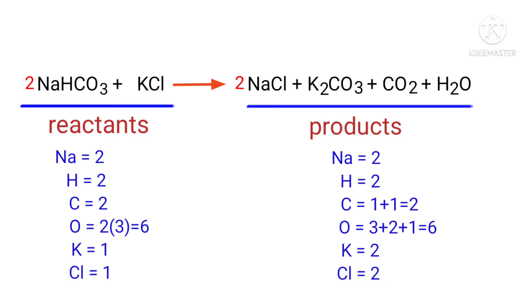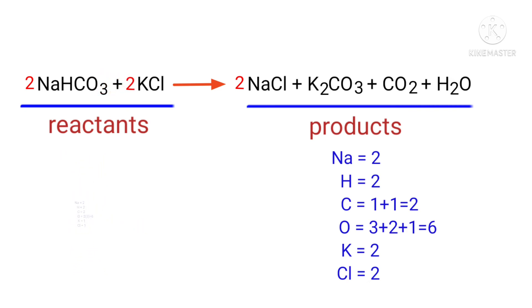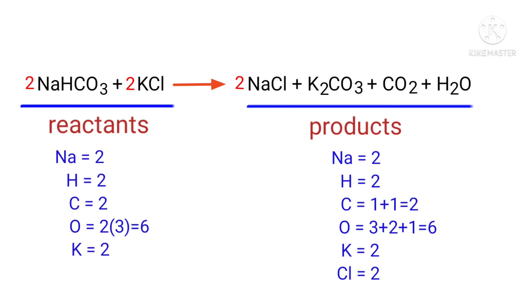Now we need to balance the potassium and chlorine atoms. To do this we need to put a coefficient of two in front of NaCl. The equation is now balanced. There are two sodium atoms, two hydrogen atoms, two carbon atoms, six oxygen atoms, two potassium atoms and two chlorine atoms on both sides.